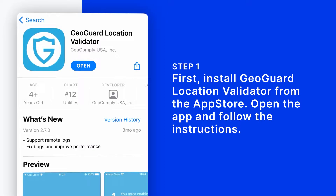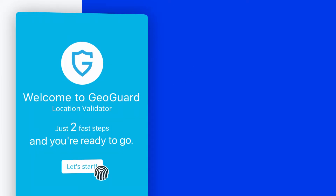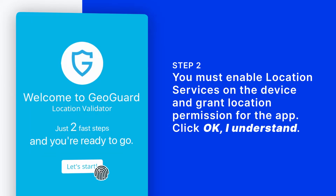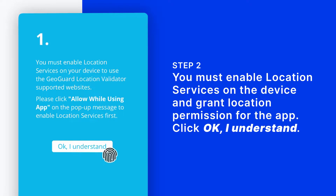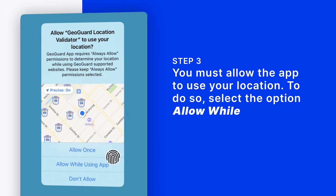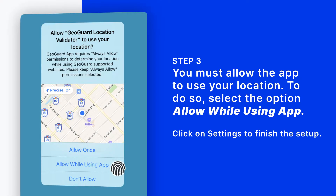Open the app and follow the instructions. You must enable Location Services on the device and grant location permission for the app. Click OK, I understand. You must allow the app to use your location. To do so, select the option Allow While Using App.